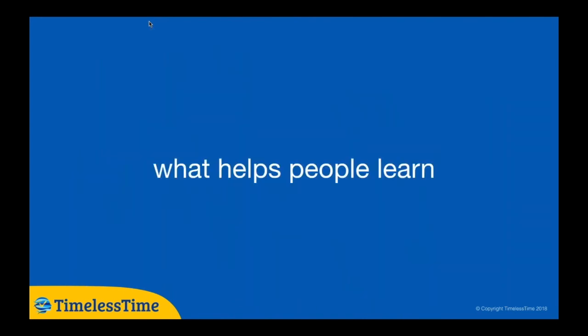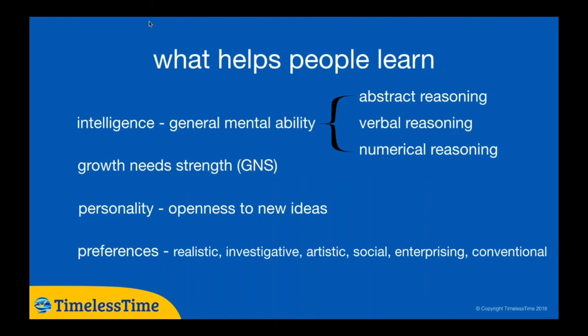In order to make sense of this, we really need to ask: what helps people learn? How is it that somebody learns those skills and knowledge, and how can somebody actually change their behavior through training? The fact is that some people learn quicker than others, some people learn in one fashion and others prefer a different fashion. Understanding what helps people learn helps us design appropriate training interventions, because if we don't get an intervention that suits the person, it will prospectively be less successful. So what does help people learn? We have four things: intelligence, growth needs strength, personality, and preferences.